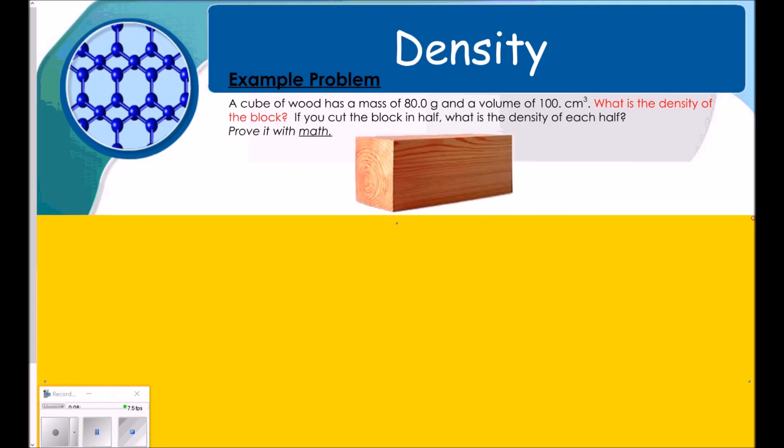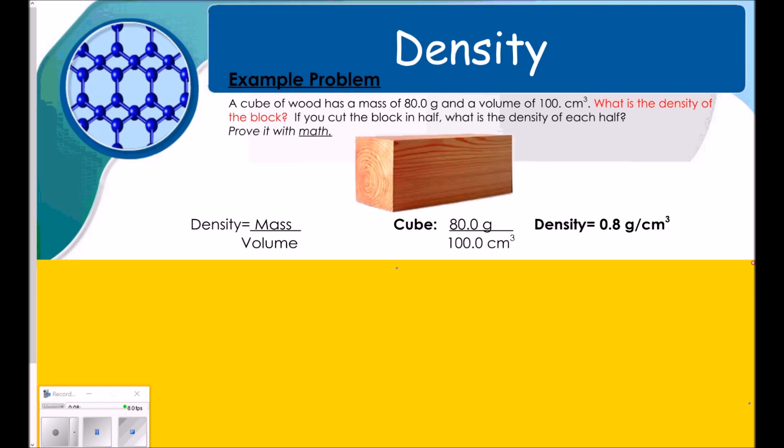Okay, so here's a good example problem that we might give you for density. A cube of wood has a mass of 80 grams and a volume of 100 cubic centimeters. What is the density of the block? Okay, so let's do that part first. So, to figure out the density, I'm going to do the mass divided by the volume. So, I've got 80 grams divided by 100 cubic centimeters. And I find out that the density is 0.8 grams per cubic centimeter.